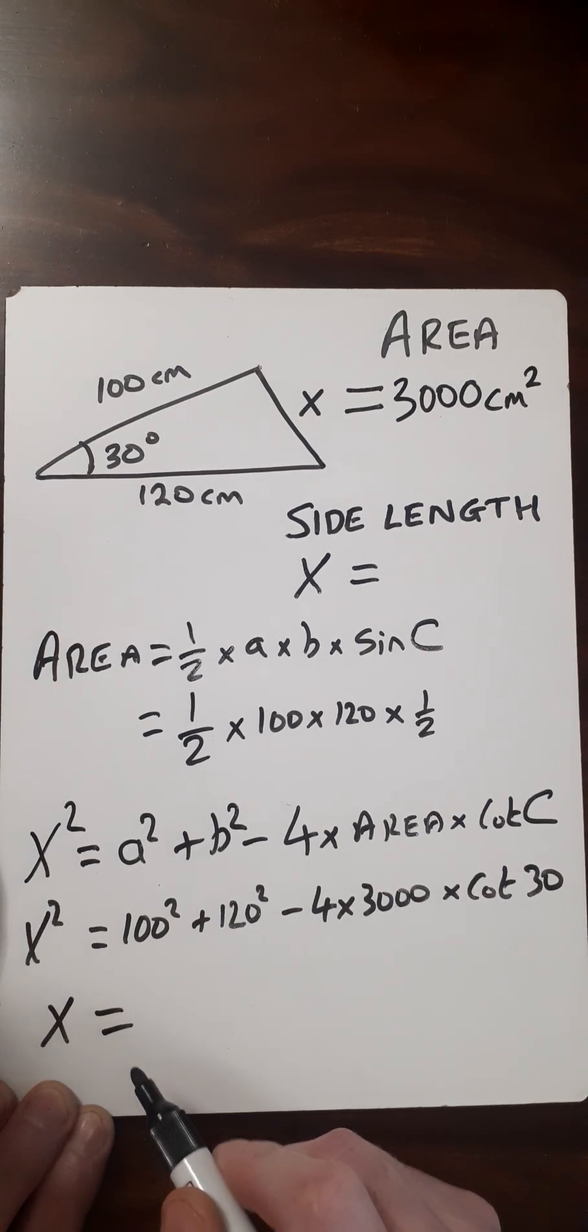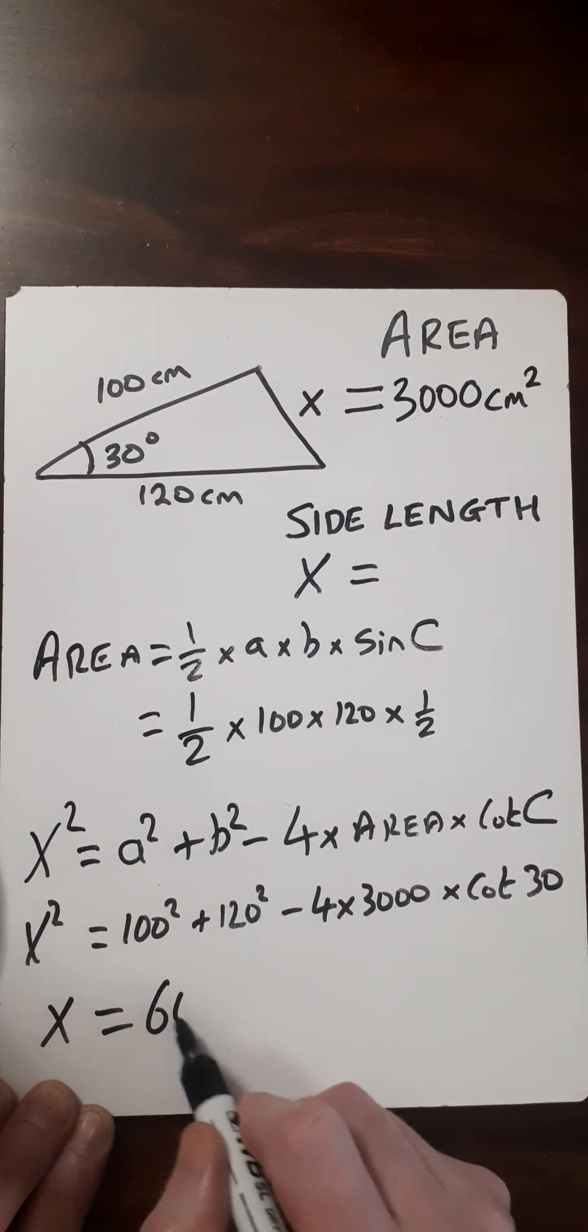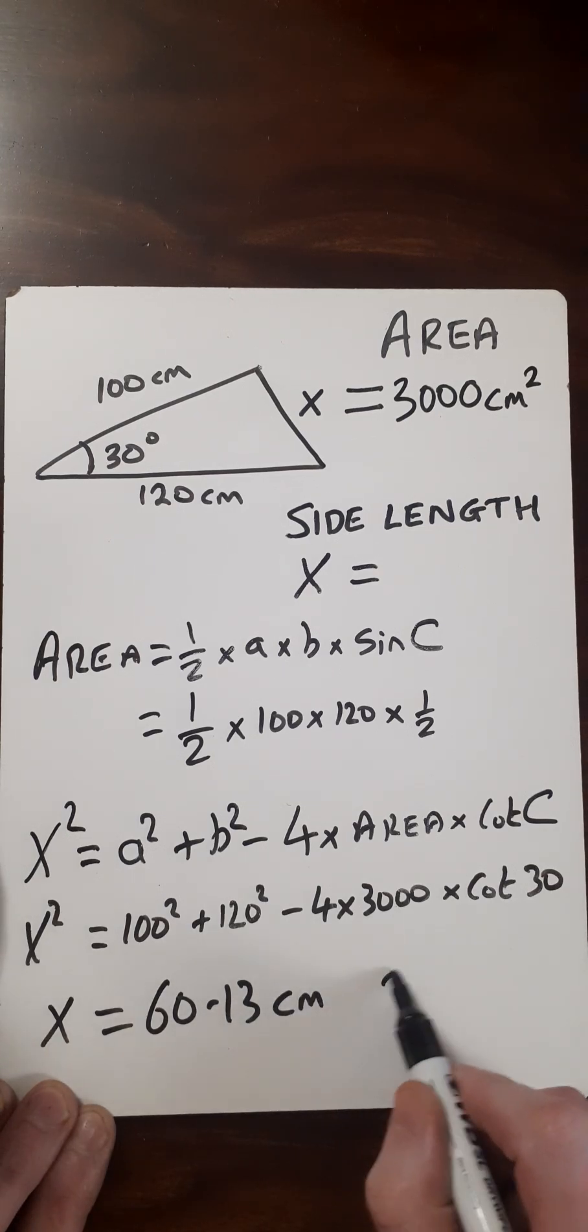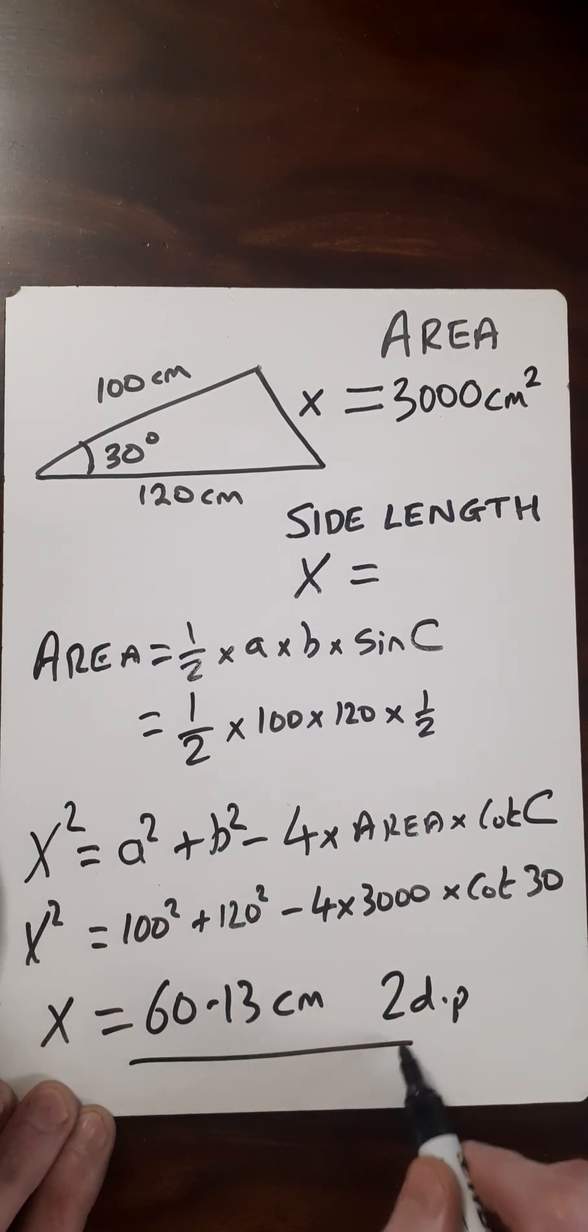You should get X equals approximately 60.13 centimeters to two decimal places. And we are done.